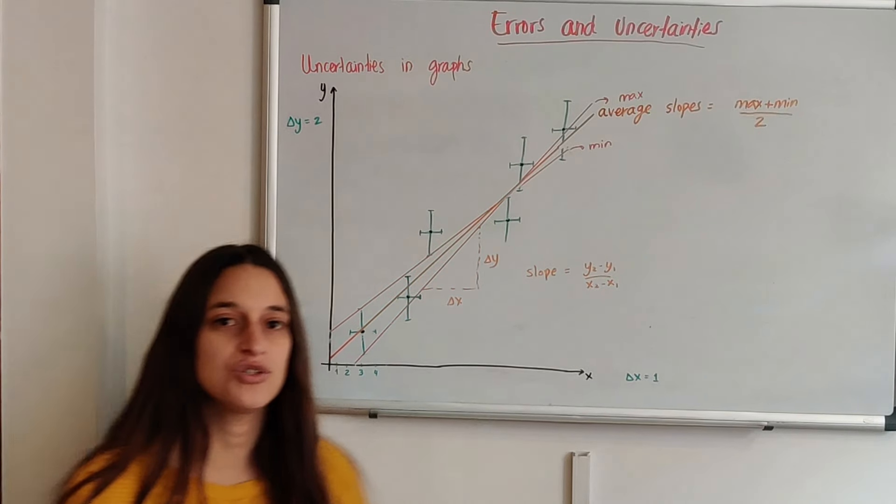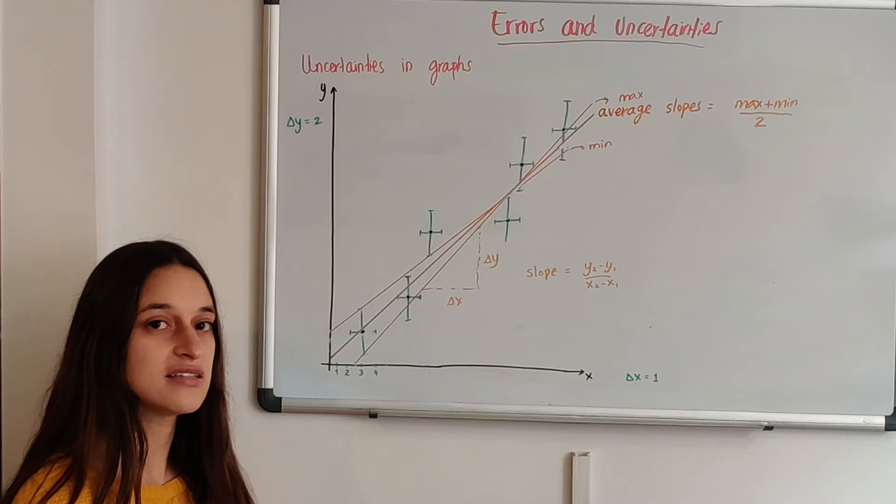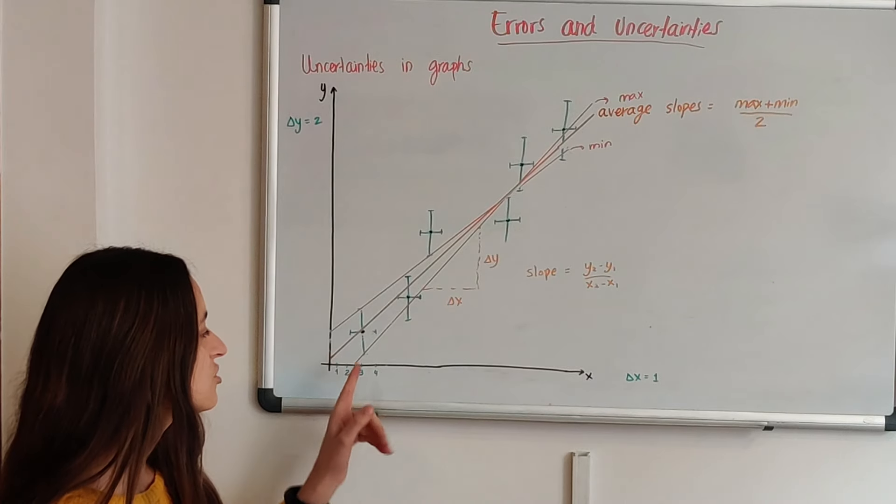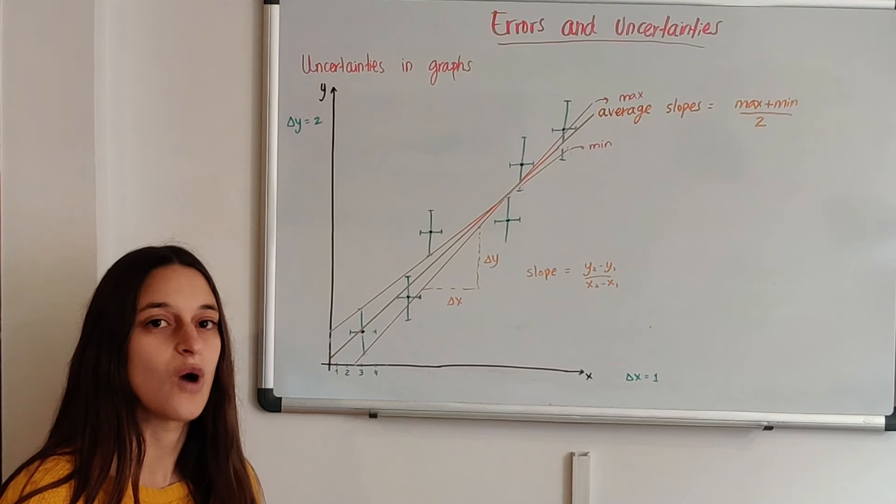And you add them, divide it by 2, and it gives you the average slope of the lines, of the data, taking into account the uncertainties in x and the uncertainties in y.